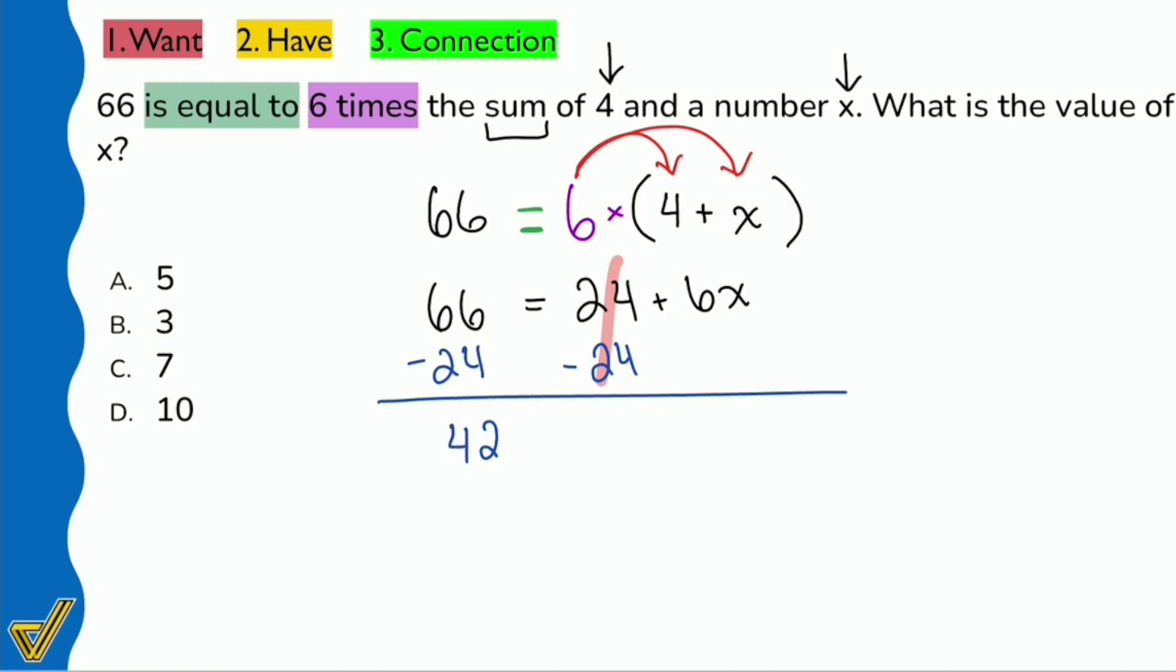It's going to cancel out on the right side, giving us 42 equals 6x. Lastly, we'll divide both sides by 6 because we see that it's multiplying by 6. Our final answer is going to be x equals 7. Booyah, we are good!